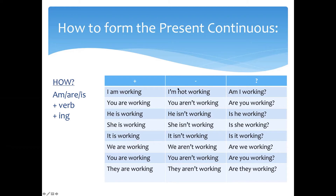If in the affirmative sentence we say 'I'm working', we reverse the auxiliary verb — am, the to be — and we get the question form: Am I working? Are you working? Is he working? Is she working? Is it working? Are we working? Are you working? Are they working?